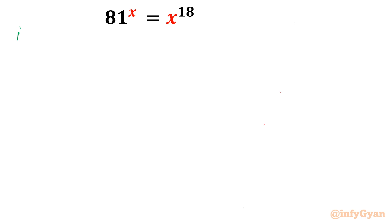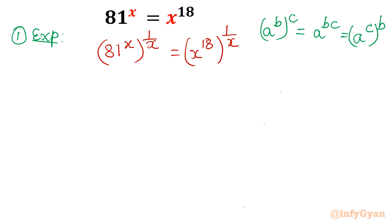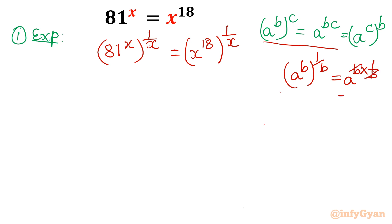Let me begin with Method 1: the exponent method. I will consider a very popular and useful property of exponents: a power bc equals a power c, whole power b. Now I will raise both sides of the equation to the power 1 over x. So we get 81 to the power x, whole power 1 over x, equal to x to the power 18, whole power 1 over x. Using the property that a power b, whole power 1 over b, equals a, the left side simplifies to 81, and the right side becomes x to the power 18 whole power 1 over x.